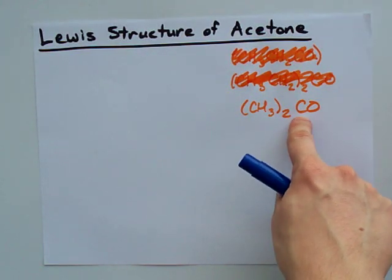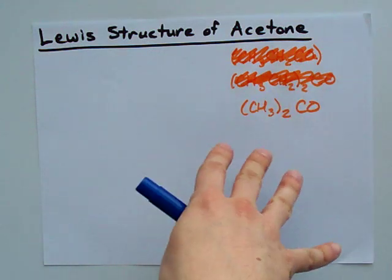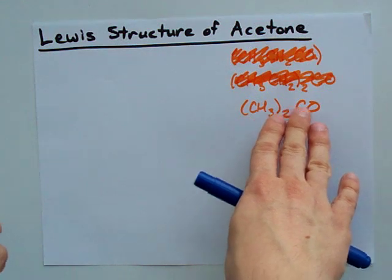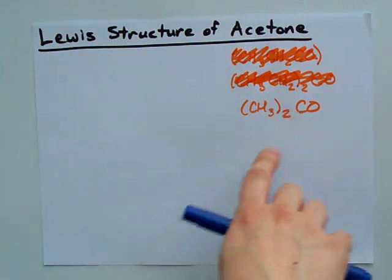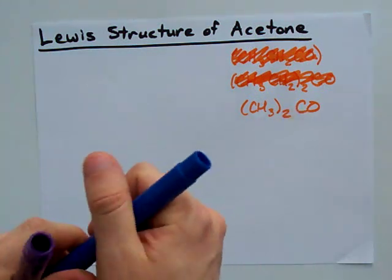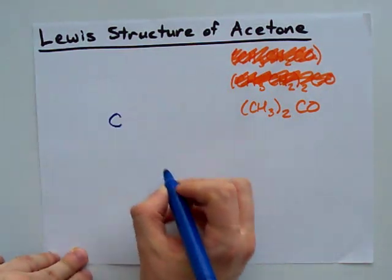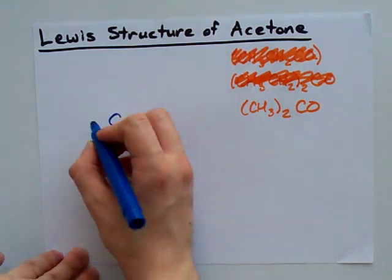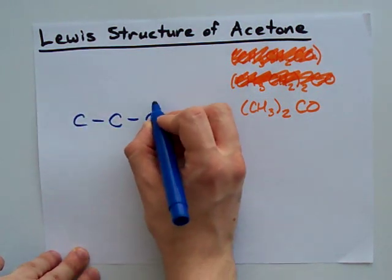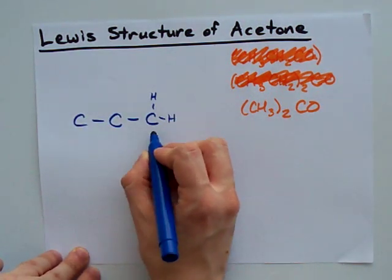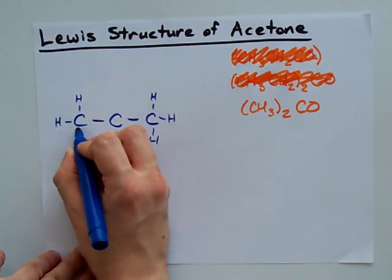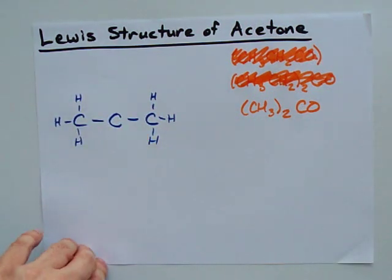This C likely is in the center. It has the lowest electronegativity, maybe except for hydrogen, but it can also make four bonds, and it needs to be bonded to this oxygen here. We end up with a carbon in the center, a carbon on either side, and remember these are CH3s. And we need an oxygen.